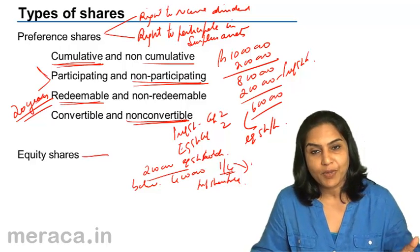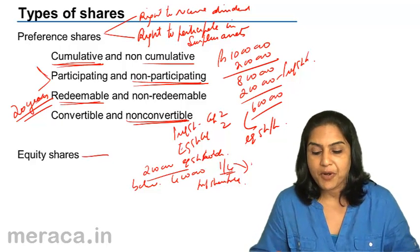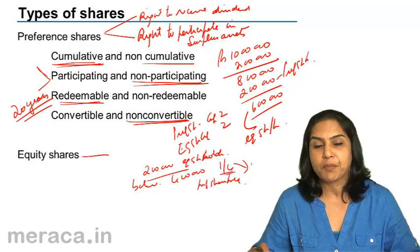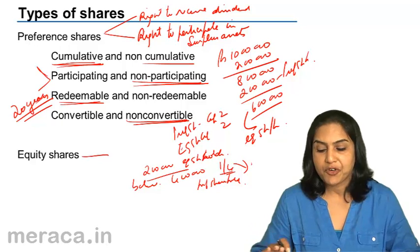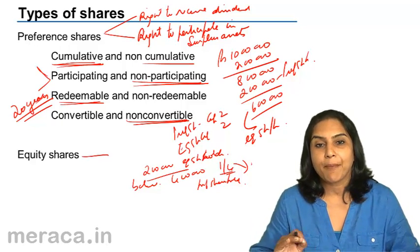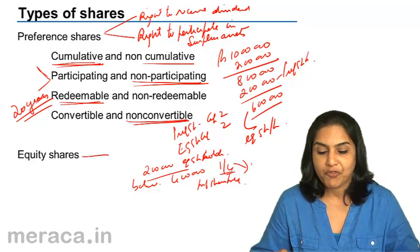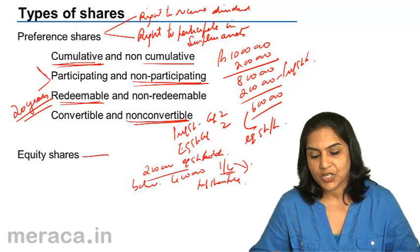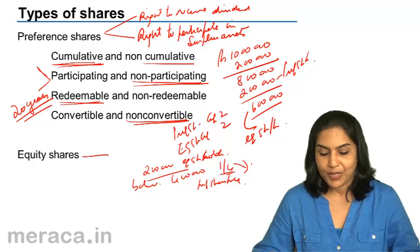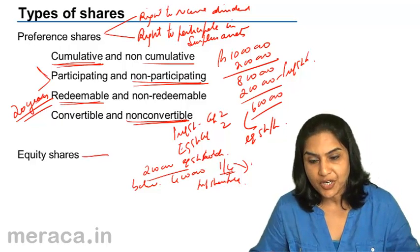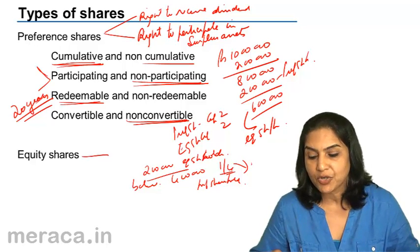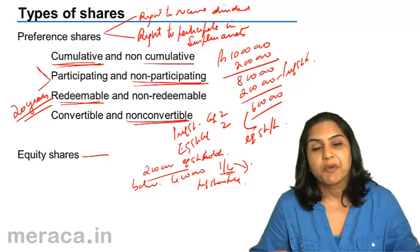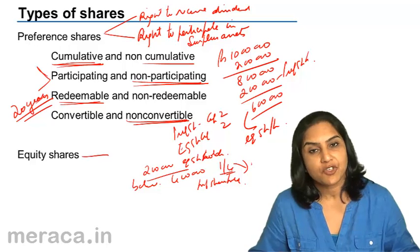To summarize, preference shares may be cumulative or non-cumulative — usually they are cumulative. Preference shares may be participating or non-participating — usually they are non-participating. Preference shares may be redeemable or non-redeemable — as per law in India, a company cannot issue non-redeemable preference shares, so preference shares are redeemable. Preference shares may be convertible or non-convertible. A preference share has two preferential rights: the right to receive dividend before equity shareholders, and on winding up of a company, the right to receive their share of capital before equity shareholders. An equity share is a share which is not a preference share.